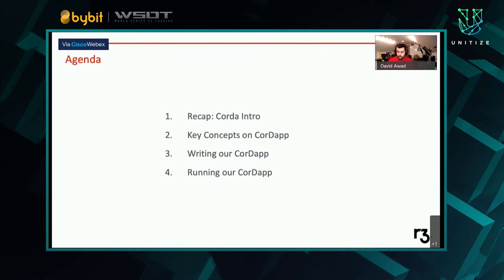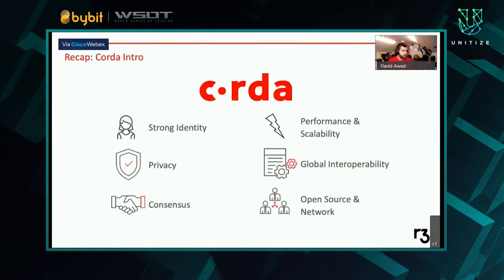To recap from our Corda intro from last time, Corda is a really powerful open source blockchain solution. It gives you strong identity features, performance and scalability, interoperability, and open source extensible features to run a network with other people. You have the usual blockchain features of consensus as well as privacy. And you can customize it to get different levels of these features to suit your particular use case.